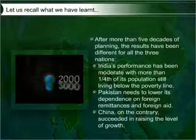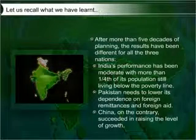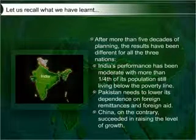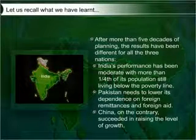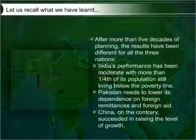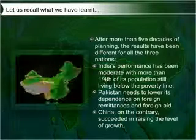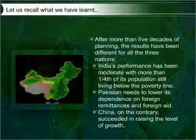After more than five decades of planning, the results have been different for all three nations. India's performance has been moderate, with more than one-fourth of its population still living below the poverty line. Pakistan needs to lower its dependence on foreign remittances and foreign aid. China, on the contrary, succeeded in raising the level of growth.